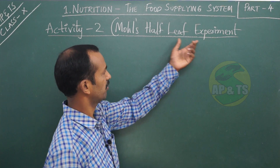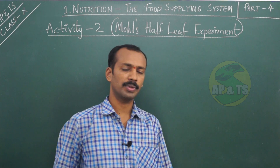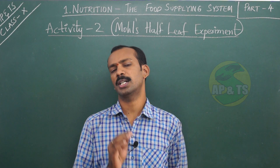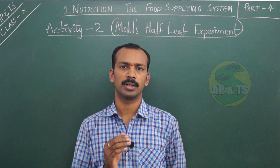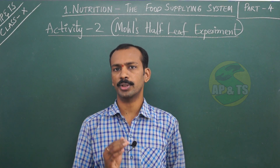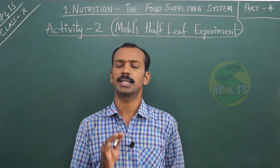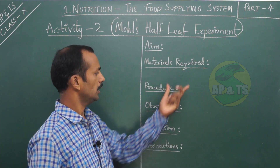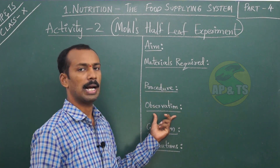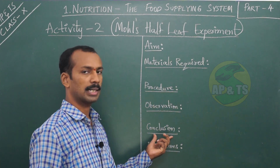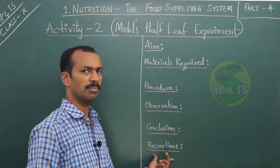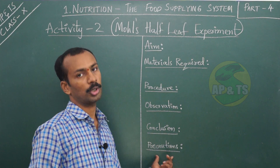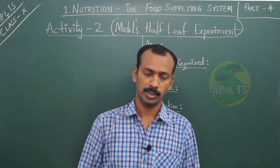For every activity there are some steps that we are going to follow. The steps are: aim, materials required, procedure, observation, and conclusion. In some experiments there is one more extra step - precautions. In this activity there is a precaution, and we will see that also.